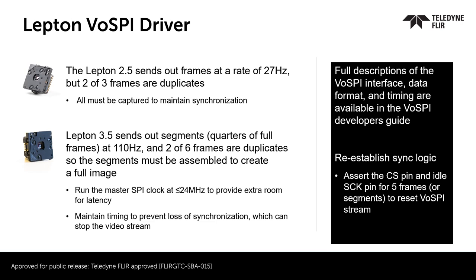Generally, the SPI clock needs to run faster for Lepton 3.5. Running it from 20 to 24 MHz generally provides the most room to complete the SPI transaction before the next frame is ready.